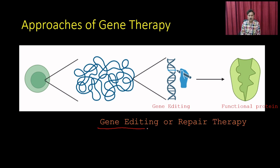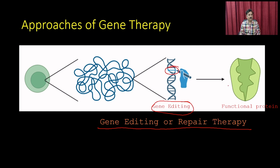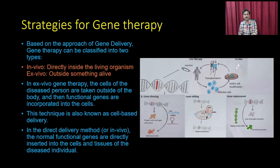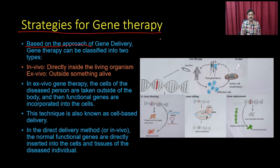In genome editing or repair therapy, you take out the genome, edit the particular gene fragment or mutations, and put it back into the cell, which then produces the original functional proteins. Based on the approach of gene delivery, gene therapy can be classified into two types.